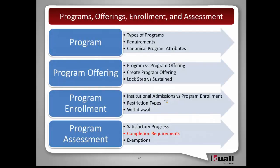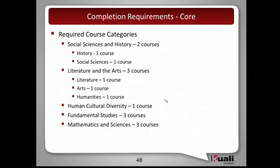Now jumping into completion requirements. Using examples from USC's catalog, these are completion requirements for general education. There are course requirements that can be of specific categories — a student might be required to take two courses within social sciences and history, one course in history and one in social sciences. There might also be a requirement for three courses in literature, with one each from literature, arts, and humanities. And there are more general core requirements, such as three courses in fundamental studies or three math and sciences courses.